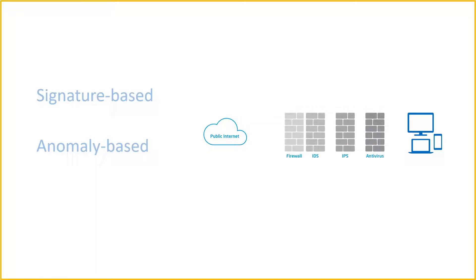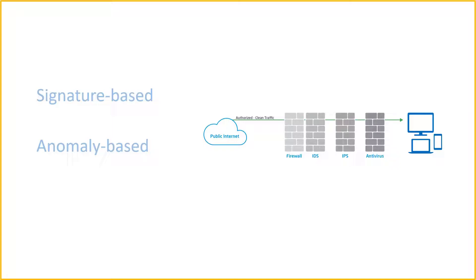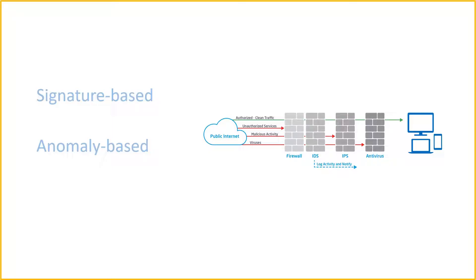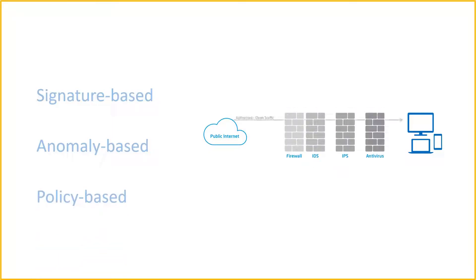Some newer and more advanced intrusion prevention systems use artificial intelligence and machine learning technology to support anomaly-based monitoring. The next technique is policy-based, which is somewhat less common than signature-based or anomaly-based monitoring.